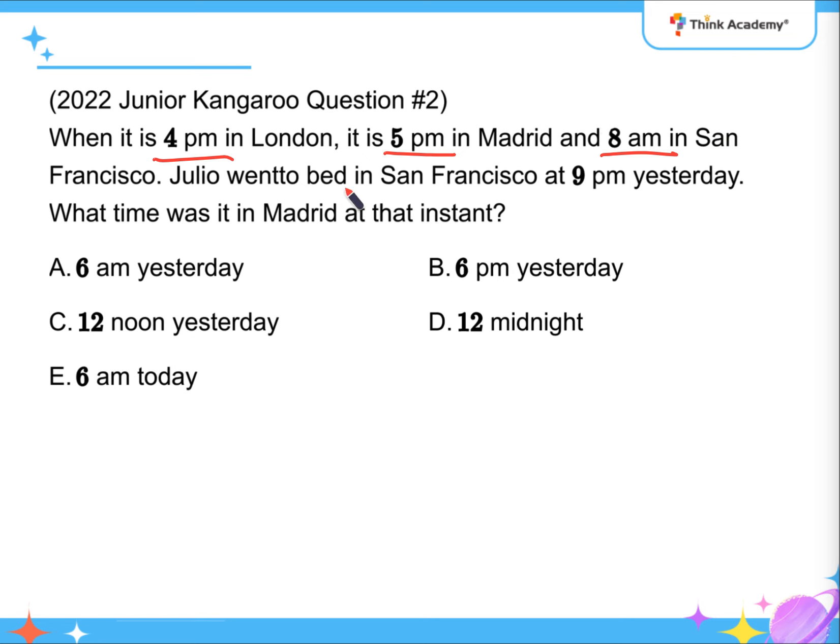it says that Julia went to bed in San Francisco at 9pm yesterday. So, it means that that's going to be adding 13 hours. And, for Madrid, after adding 13 hours to 5pm, it's going to be 6am on the next day.